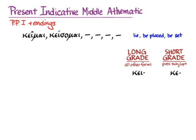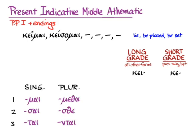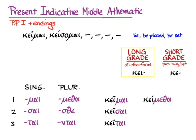Let me show you the conjugations of this verb in the present system. Here we have the present indicative middle because this is deponent, and these are the athematic endings that you know. When we add them to the long grade of κεῖμαι, we'll get κεῖμαι, κεῖσαι, κεῖται, κείμεθα, κεῖσθε, and κεῖνται. Pretty simple, pretty logical, and the only weirdness is that you might not be expecting a long grade stem here.